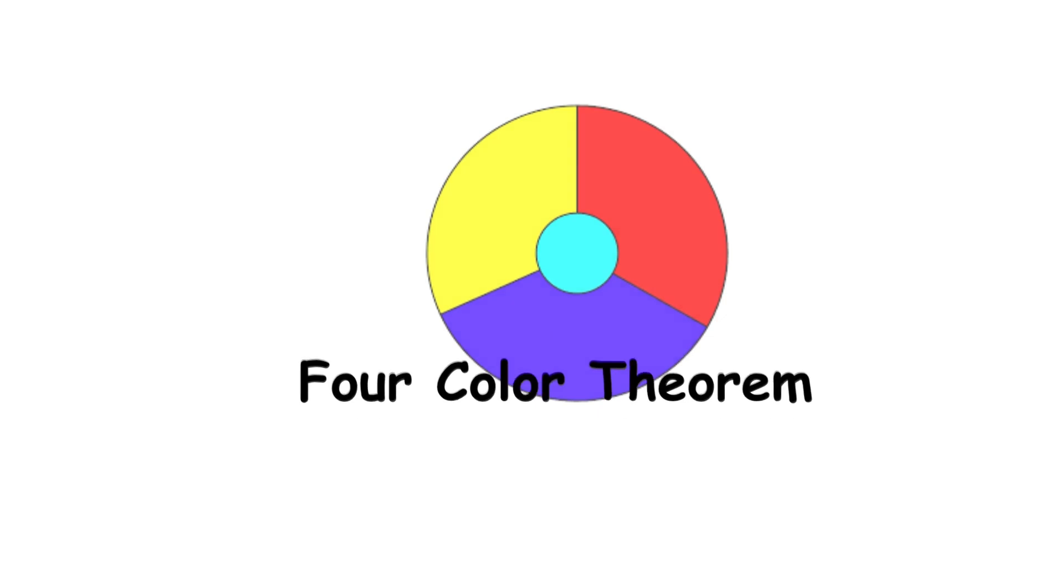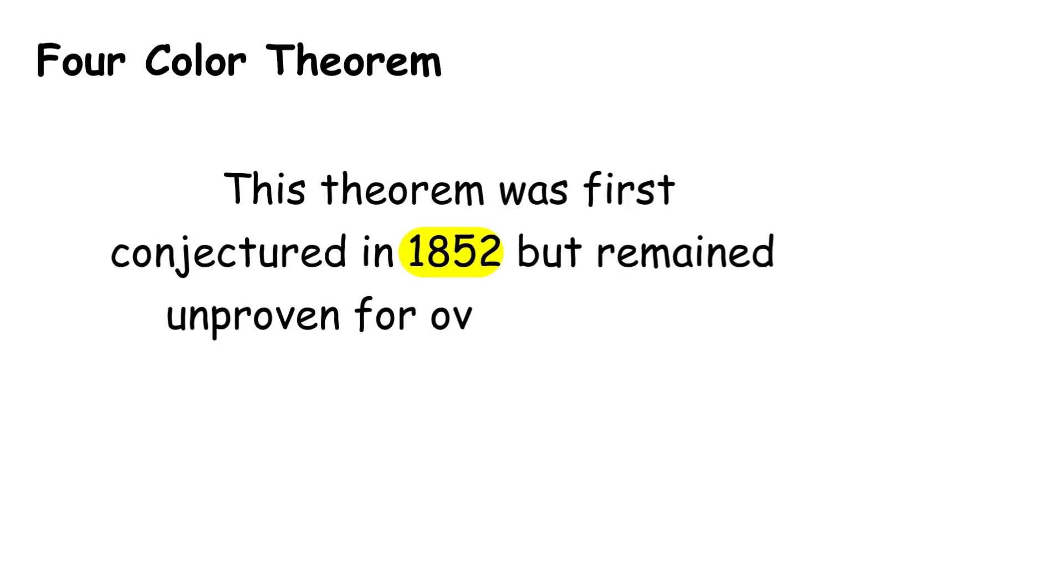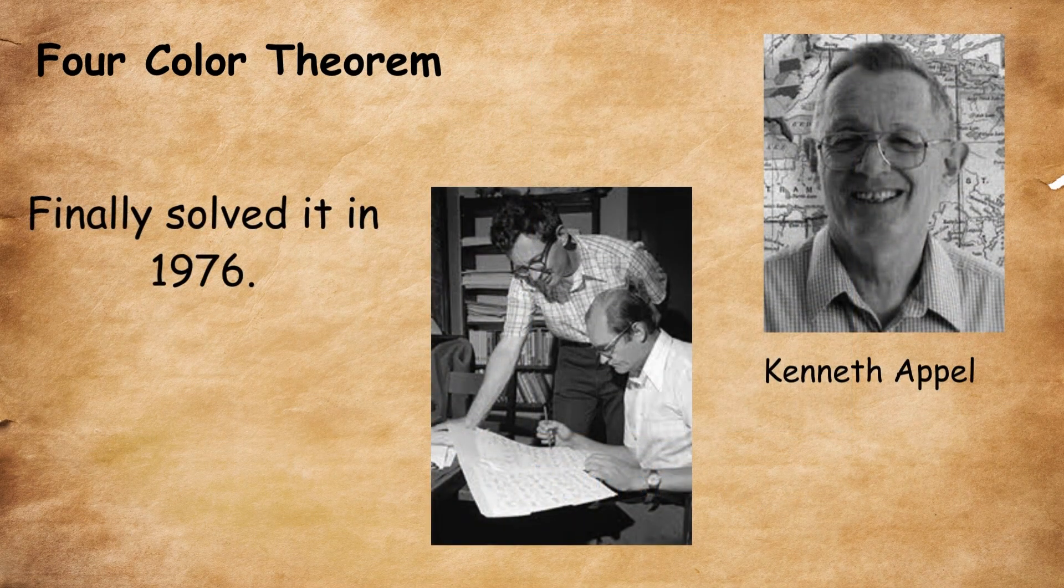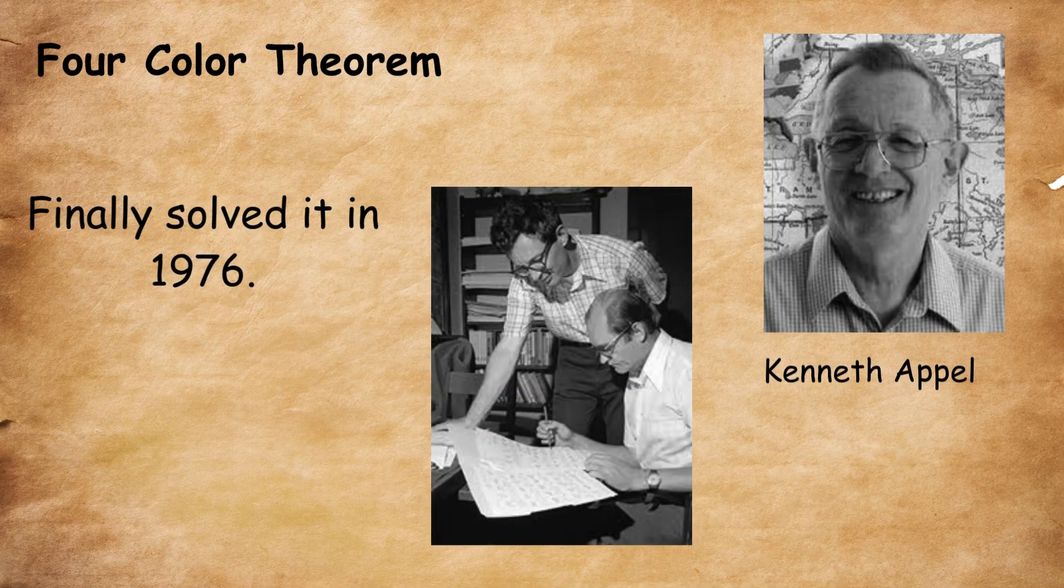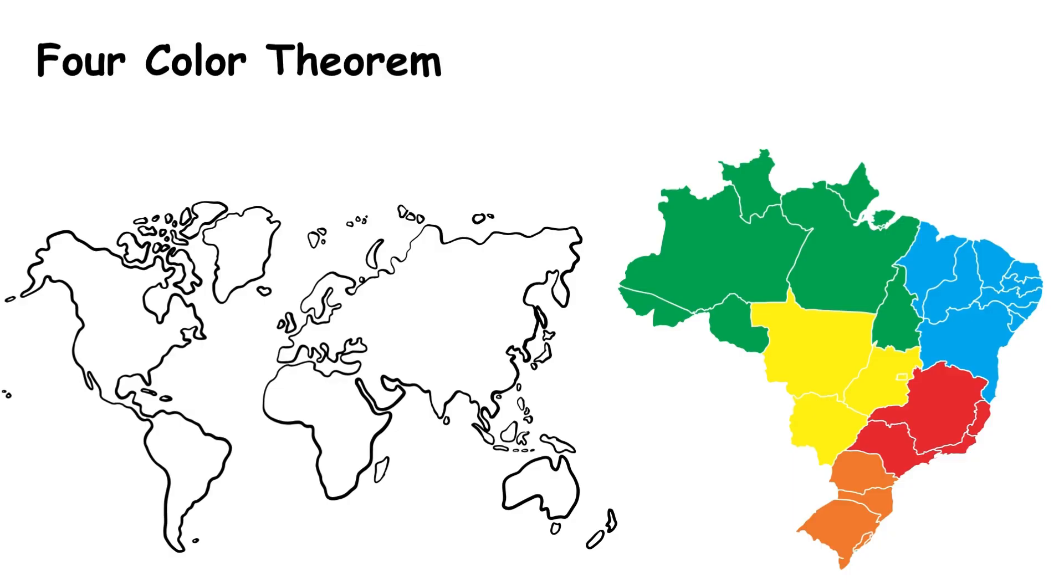Four-Color Theorem. This theorem was first conjectured in 1852, but remained unproven for over 120 years until mathematicians Kenneth Appel and Wolfgang Haken finally solved it in 1976. The theorem states that any map drawn on a flat surface can be colored using only four colors such that no two adjacent regions share the same color.